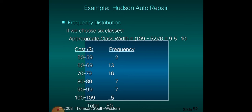Using the Hudson Auto Repair example: from 50 to 59 the frequency is 2; from 60 to 69 the frequency is 13; continuing until 100 to 109 the frequency is 5, giving a total of 50. The same procedure applies for both qualitative and quantitative frequency distributions.